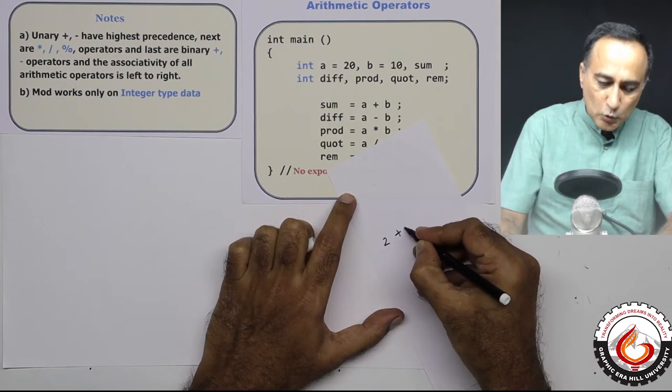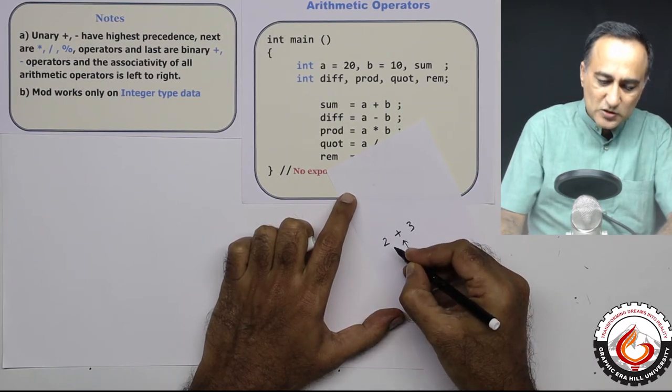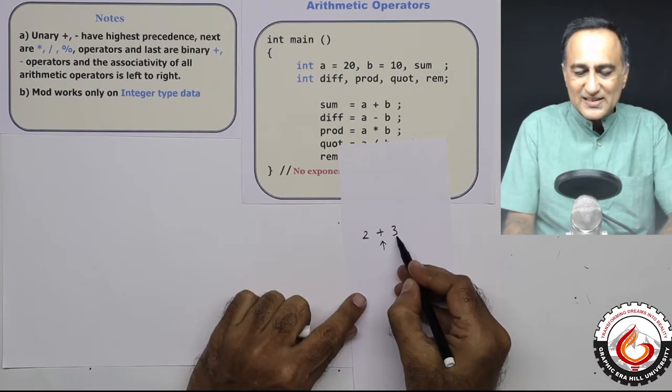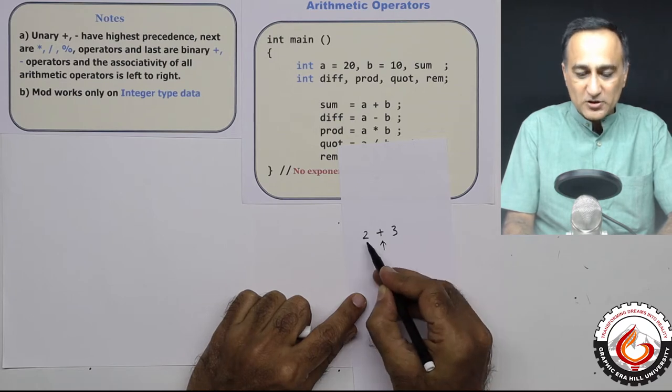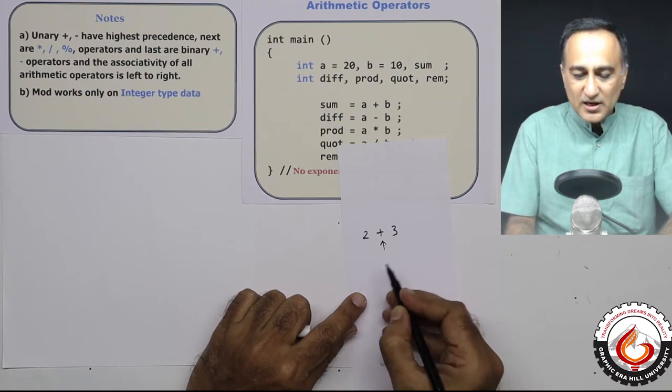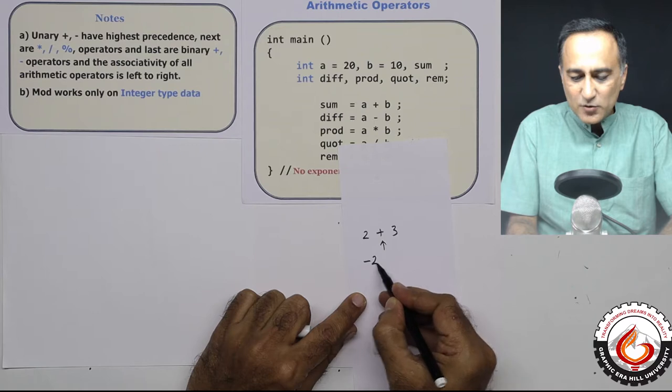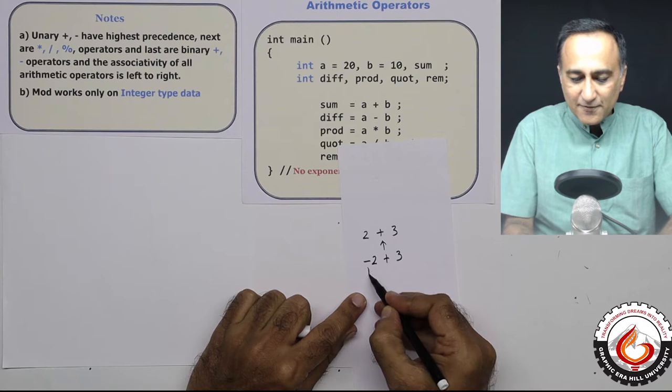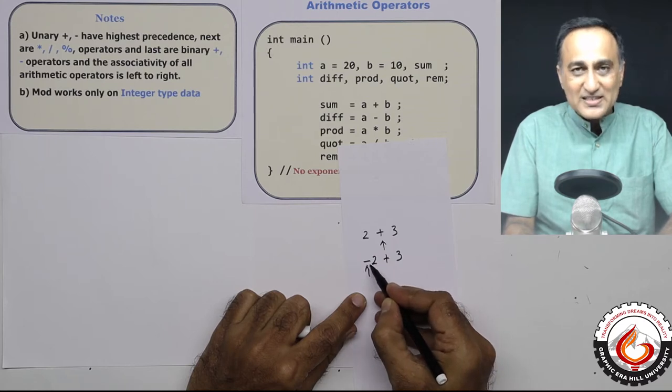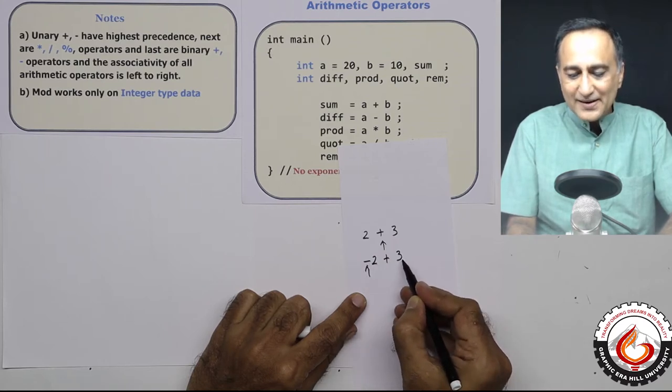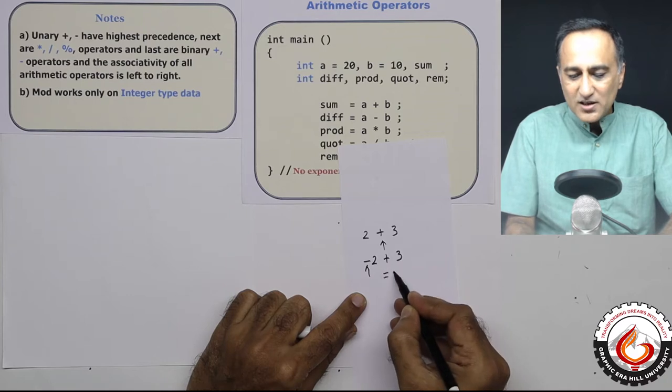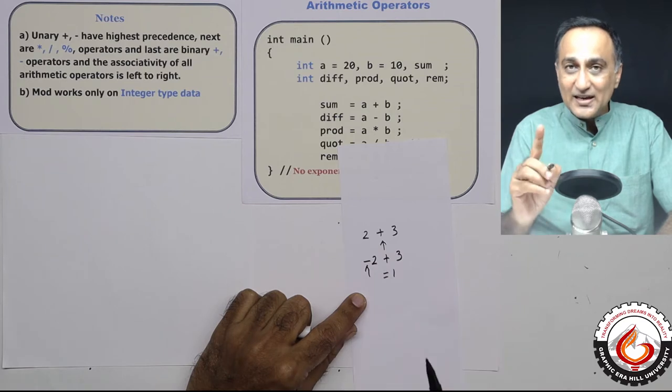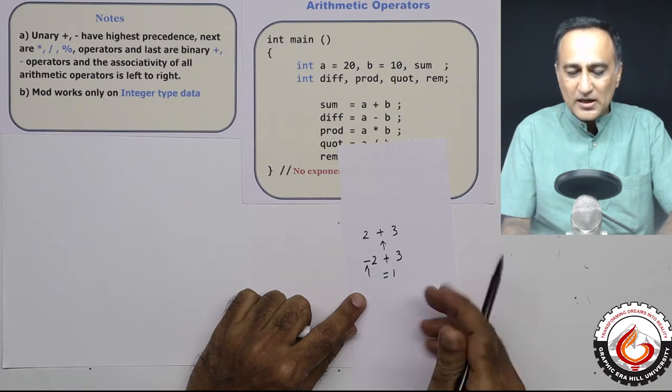Suppose I do two plus three here, the plus operator is between two numbers. That's why in this case, plus is a binary operator because it involves two operands. But I could also have something like minus two plus three. Now what do you think will happen first? First, two will become minus and then the result of that will be added to three, resulting in one. So here, this minus is only acting on a single operand, it's called a unary operator.